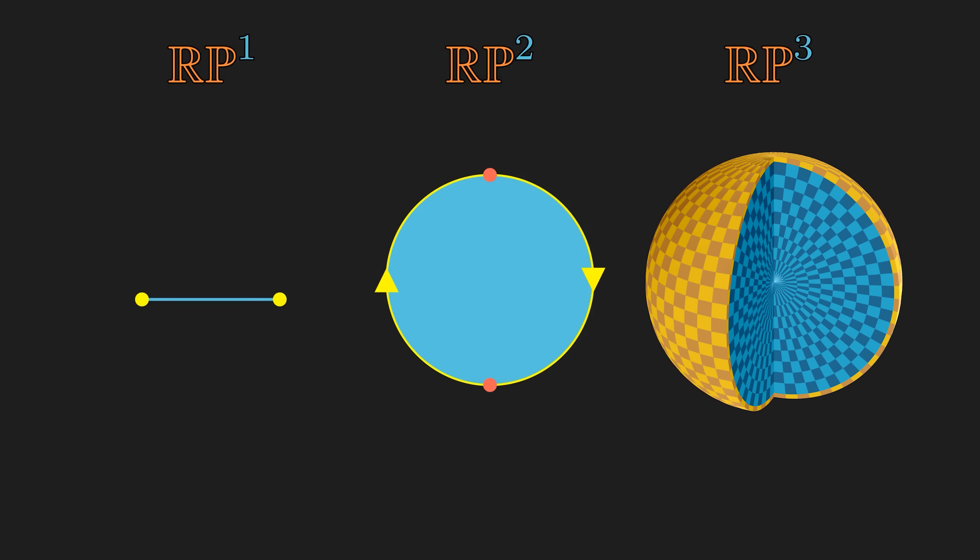RP³ follows the same idea. We start with the solid ball and treat each boundary as a portal that makes you reappear on the opposite side.